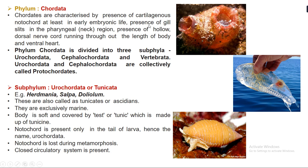Next is phylum Chordata, characterized by the presence of a cartilaginous notochord at least in early embryonic life — as the organism grows, the notochord disappears. There is also a presence of gill slits, a hollow dorsal nerve cord running through the length of the body, and a ventral heart. Phylum Chordata is further divided into three sub-phylums: Urochordata, Cephalochordata, and Vertebrata.